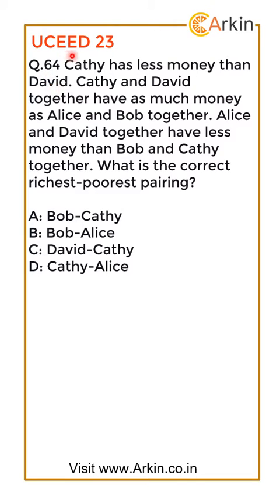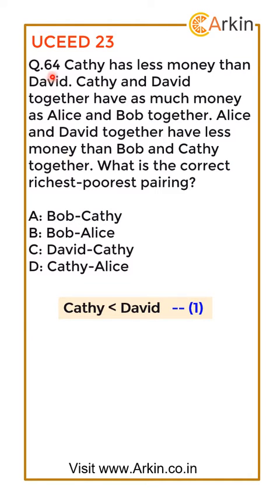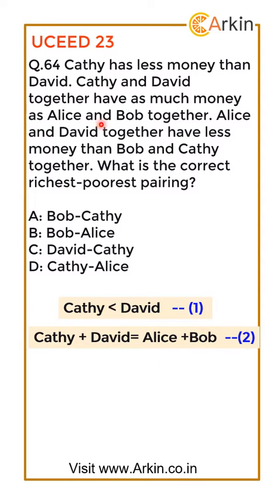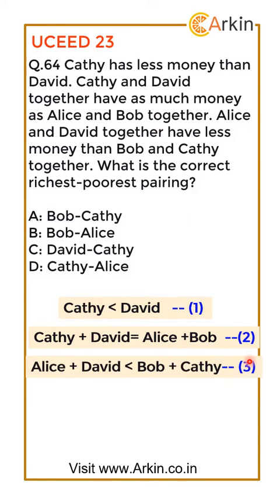In question number 64, UC 2023 paper, certain information is given about the money of Kathy, David, Alice, and Bob, and based on that we have to choose the richest and poorest. There are three pieces of information: first, Kathy has less money than David; second, Kathy and David have as much money as Alice and Bob together; third, Alice and David together have less money than Bob and Kathy.